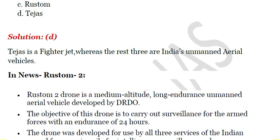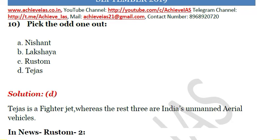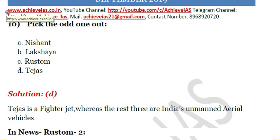Tejas is a fighter aircraft and was recently in news because the then-Defense Minister Rajnath Singh became the first defense minister to fly in this fighter aircraft. All others — Nishant, Lakshya, and Rustam — are unmanned aerial vehicles. This is all about today's discussion. If you liked the video, please like it, share it with your friends, and subscribe to our channel. You can also join our public Telegram channel, the link for which will be provided in the description box. You can also visit our website at www.achieveias.co.in for various updates.